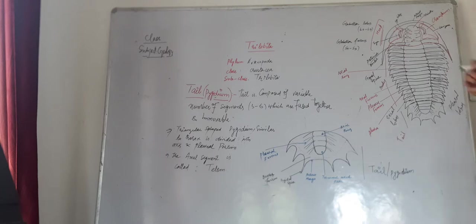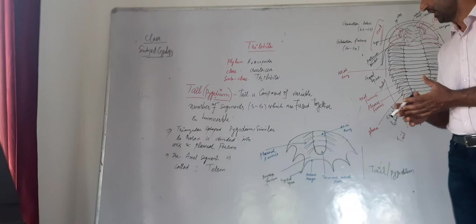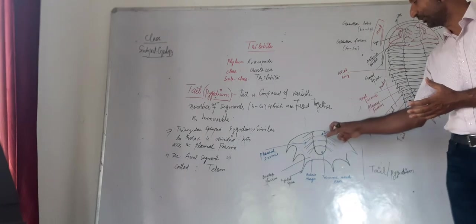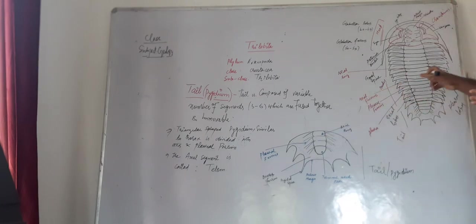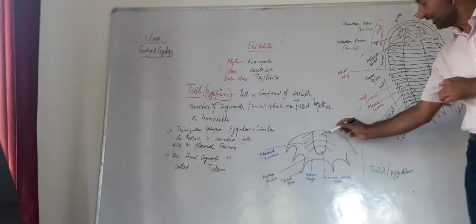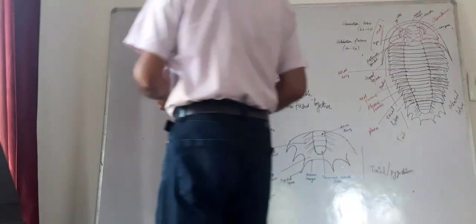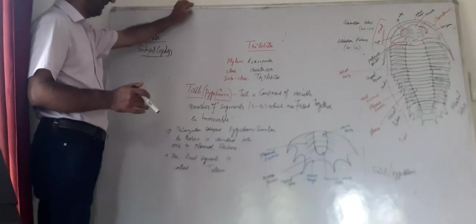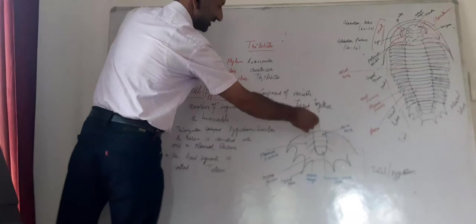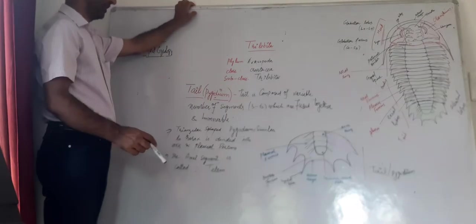All the segments are fused together and also they are immobile, immovable. Whereas in the body part we have seen that the segments are movable, they move at the point which is known as fulcrum. But here they do not move. It is a hard single structure, this tail. This part of a trilobite is a single structure. No doubt the tail is composed of segments but they do not move, they are immovable.